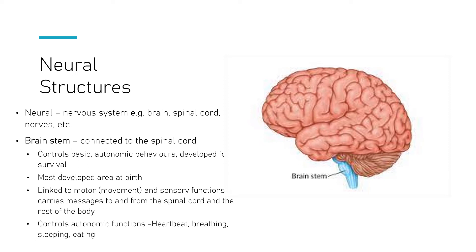The first area to be aware of is the brainstem, which is connected to the spinal cord. The brainstem controls what are known as autonomic behaviours — things developed for survival that we absolutely need. Autonomic functions include your heartbeat, breathing, sleeping, and eating. It's probably no surprise that this develops quite early; the brainstem is fully developed at birth because you need all of those things to survive. It is the most developed brain area at birth.